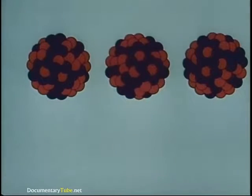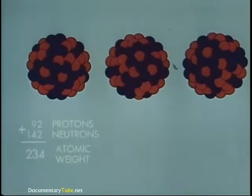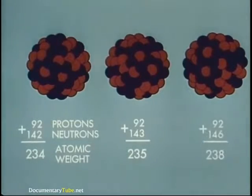Naturally occurring uranium has three isotopic forms, with atomic weights of 234, 235, and 238.